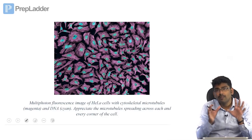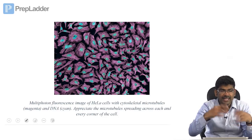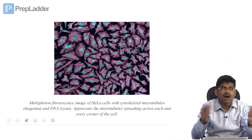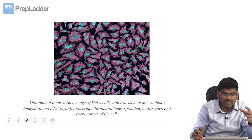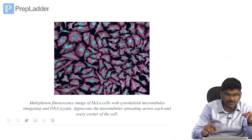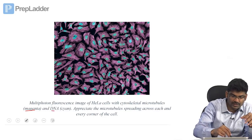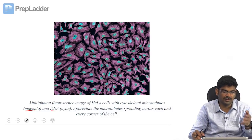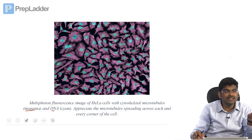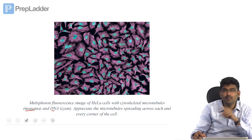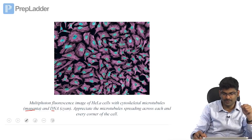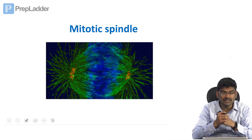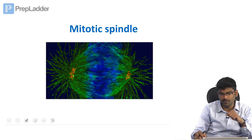Microtubules radiate through each and every corner of the cell. In cultured HeLa cells, microtubules are shown in magenta color and DNA in cyan — you can see them going to every corner, providing mechanical strength. Mitotic spindle formation also involves microtubules.